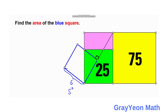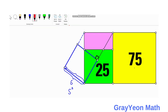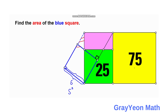We identify the side S of the blue square. We draw a line connecting two points of the blue square, and as you can see, we form a right triangle. It is a right triangle because one angle is 90 degrees. The right triangle I am referring to is this one.